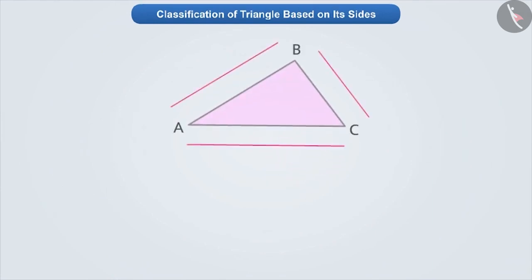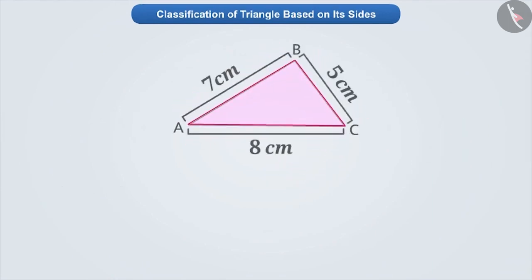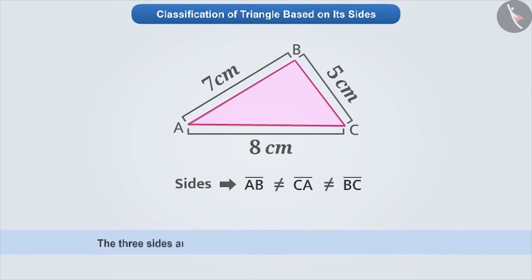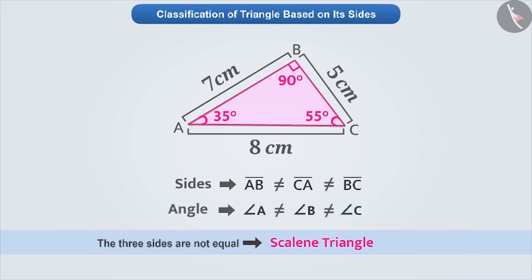Look at this triangle. If we take the measurement of its three sides, then we will know that all its three sides are not equal. Such triangles, whose sides are not equal, are called scalene triangles. If we take the measurement of its angles, then we will know that its angles are not equal. In this way, we can say that if all three sides of a triangle are not equal, then its angles are also not equal.